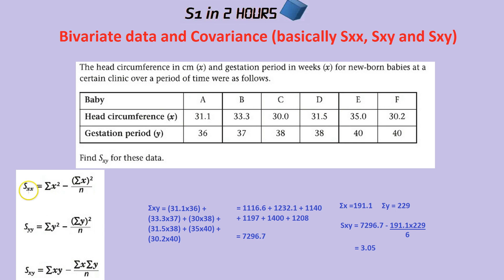If the question was asking for SXX, that sigma symbol means the sum of, so that means the sum of x squared. What we would do is square each x value and add them all up. Then we'd take away the sum of x, all squared. Notice the big difference: in the first part you square each number first then add them all up, whereas here you add all the numbers up first and then square that answer. The order is very different, and then you divide by how many numbers there are.